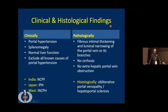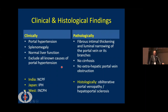Clinically, portal hypertension is present and splenomegaly is seen in most patients. Liver function remains normal in the majority, and all known causes of portal hypertension must be excluded. Pathologically, there is fibrous intimal thickening and luminal narrowing of the portal vein, no cirrhosis on histopathology, and no extrahepatic portal vein obstruction. Histologically there may be obliterative portal venopathy or hepatoportal sclerosis.